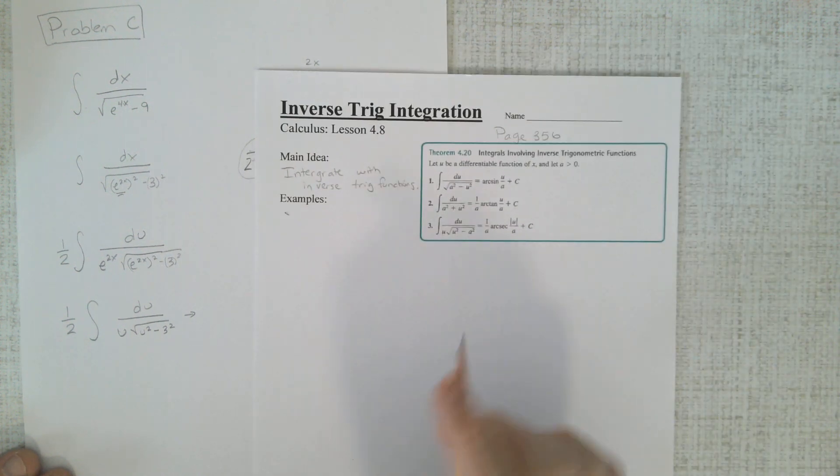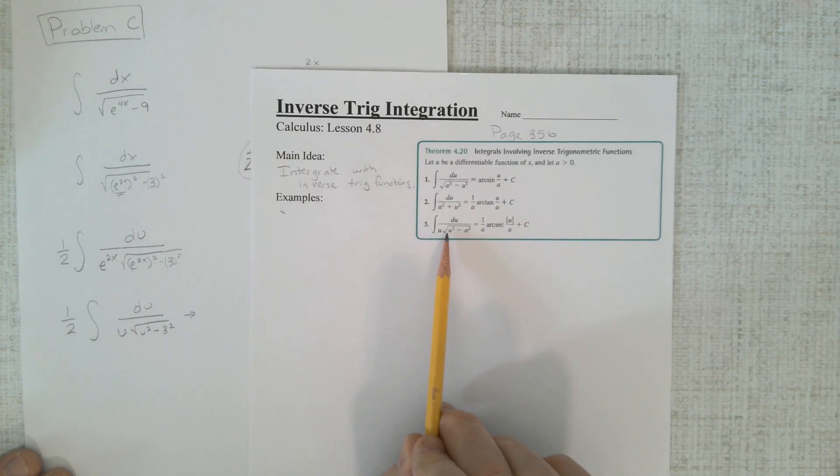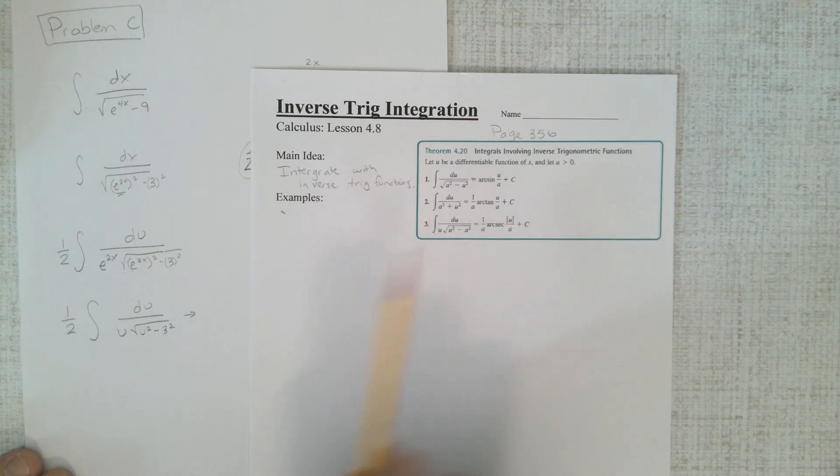Now I have 1 half integral du. That's u. And this is u squared minus 3 squared. And what do you know? That looks exactly like that. du, u, u squared minus a squared. du, u, u squared minus a squared. And now just follow the rules.